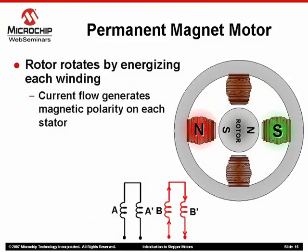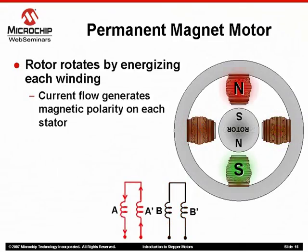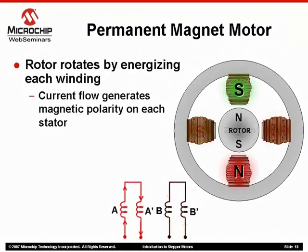To rotate the rotor, voltage is applied to each phase sequentially. Current begins to flow, creating a polarity on each pole of that stator. As you can see, rotation in a particular direction is accomplished by applying voltage to the individual phases in a particular sequence. Furthermore, to rotate the rotor in the opposite direction, we need only reverse this voltage sequence.